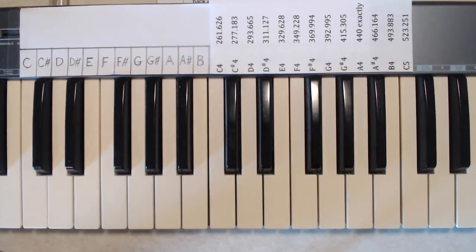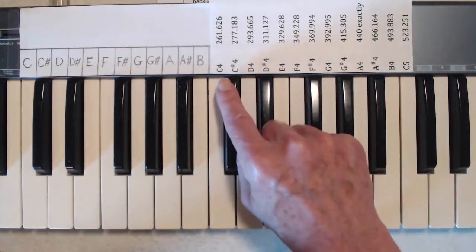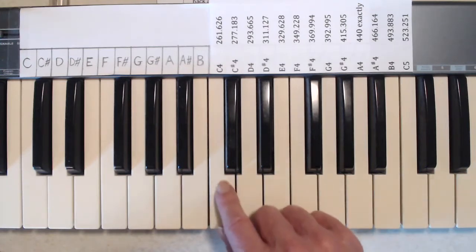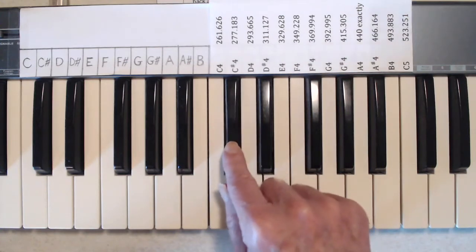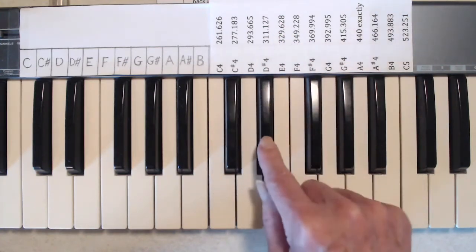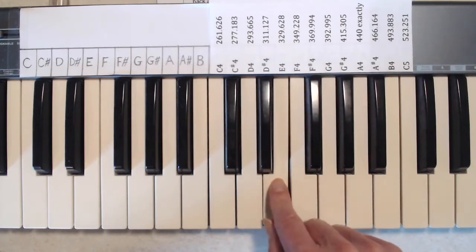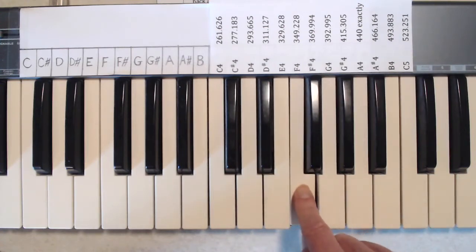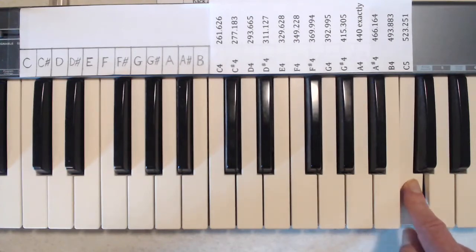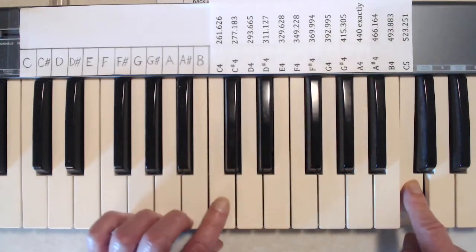We can also refer to middle C as C4. That's what it's called in scientific pitch notation, which is a more precise way of naming individual notes. So middle C is C4, the next note up is C sharp 4, then D4, D sharp 4, E4, F4, all the way up to C5, the note that's an octave above C4. So there's our octave.